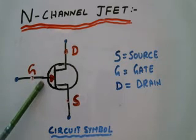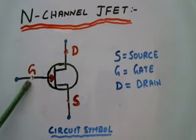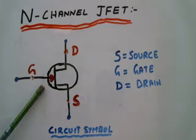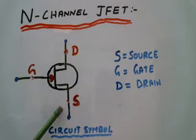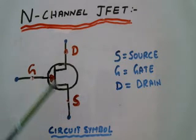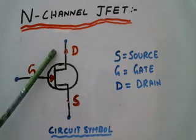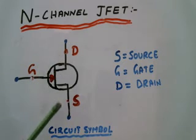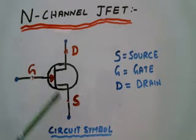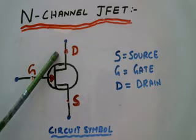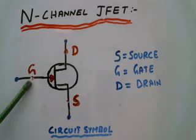The terminal with an arrow is the gate terminal. The arrow is pointing inwards in N-Channel JFET. This is a source terminal and opposite of source terminal is the drain terminal. Source is a terminal through which charge carriers enter the device, and the drain terminal is the terminal through which charge carriers leave the device. This gate terminal forms a P-N junction with the channel.